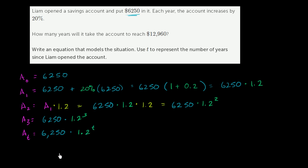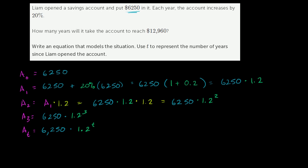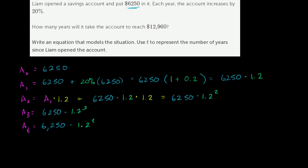1.2 to the t-th power. So they say write an equation that models the situation. We want to figure out how many years will it take the account to reach 12,960. So we essentially want to say, when is the account going to be 12,960? When is that going to be equal to 6,250 times 1.2 to the t-power? So that's the equation right over there that models the situation.